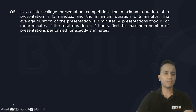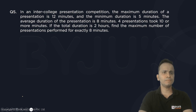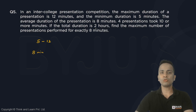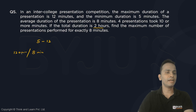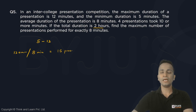There is not much calculation in this question, but plenty of logic to be applied. In the college presentation problem, maximum duration is 12 minutes and minimum is 5 minutes, and the average is 8 minutes. Total duration is 2 hours, that means 120 minutes. Dividing total duration by average duration: 120 divided by 8 gives 15 presentations.